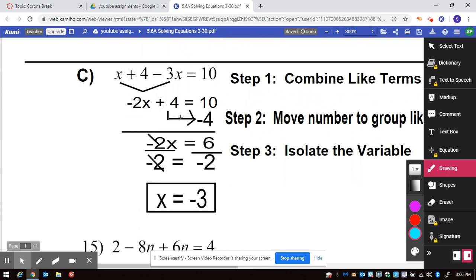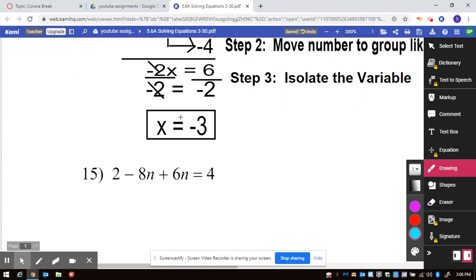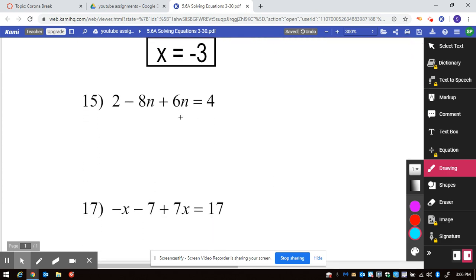Moving on, I'm going to do number 15. I'm going to do similar steps. The only difference is this time, when I identify the variables, they're n's, and those are like terms. Here's a regular constant and a regular constant. I can see that on this left hand side, I cannot have squares and circles on the same side.